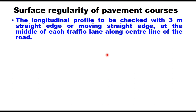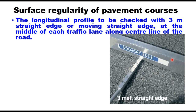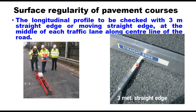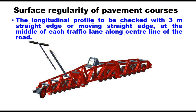Surface regularity of a pavement course can be measured using a 3 meter straight edge or by a moving straight edge at the middle of each traffic lane along the center line of the road. A 3 meter straight edge is a straight bar with a scaled wedge; the bar is placed on the road and the gap between the road surface and the straight edge is measured using this wedge. Working with a rolling straight edge is faster as it simulates a 3 meter rigid straight edge sliding along the road surface. It consists of a rigid frame supported on pneumatic or rubber tire wheels, pushed at a speed of 1 to 2 kilometers per hour (17 to 33 meters per minute), and the number of irregularities, their length, and distance from start are recorded.